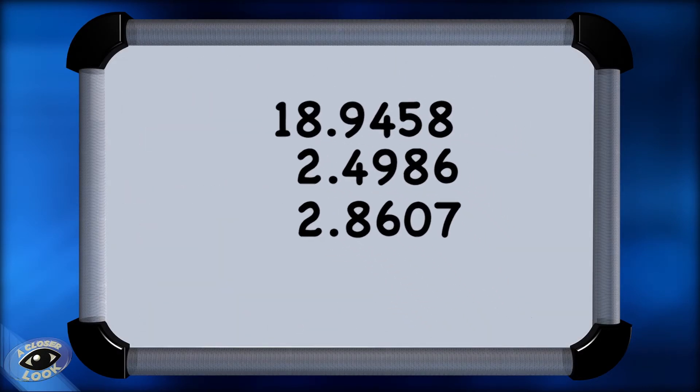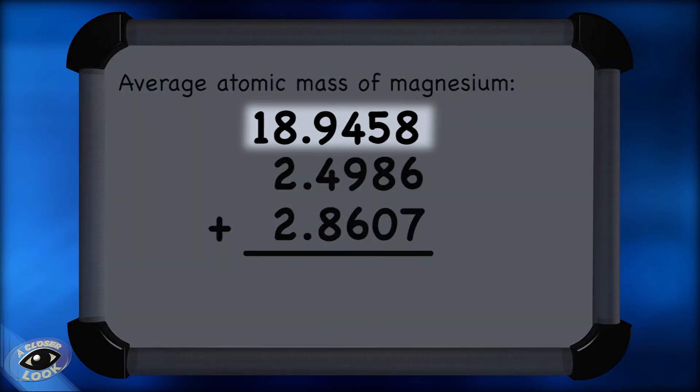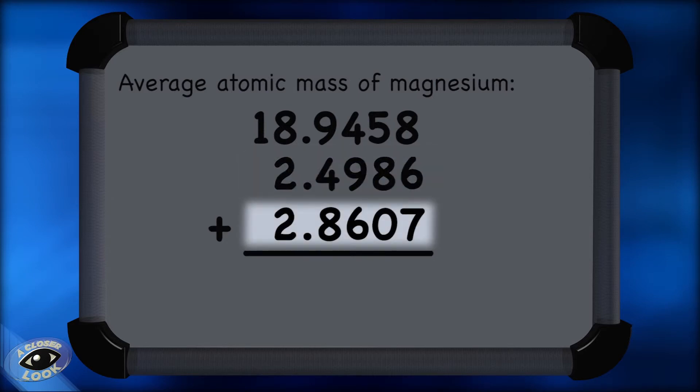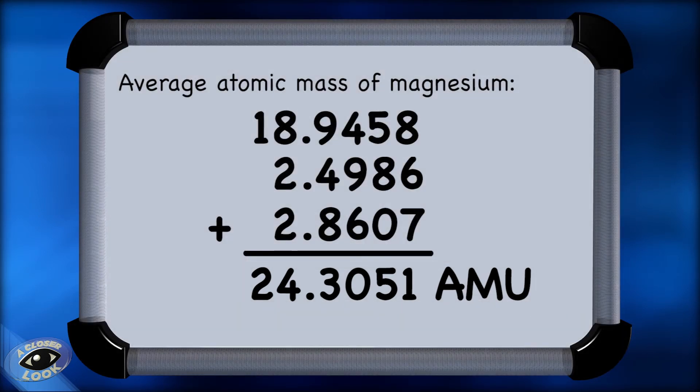To get the average atomic mass of magnesium, we add the mass contributions of each of the three individual isotopes to the overall average. 18.9458, plus 2.4986, plus 2.8607, and we get 24.3051. And that's the average atomic mass of magnesium in AMU.